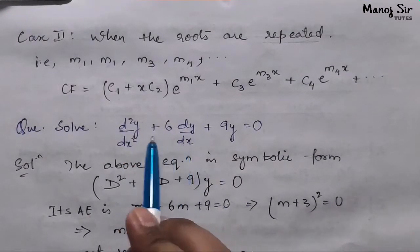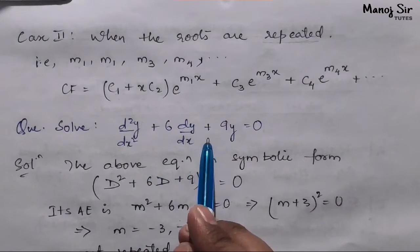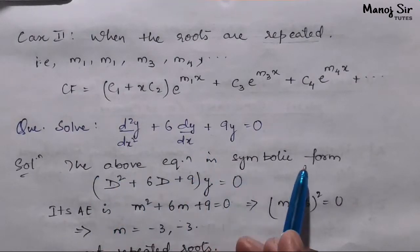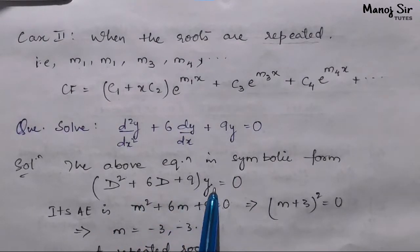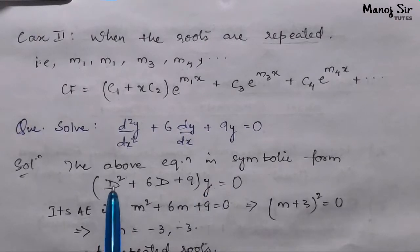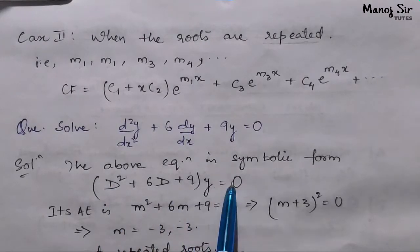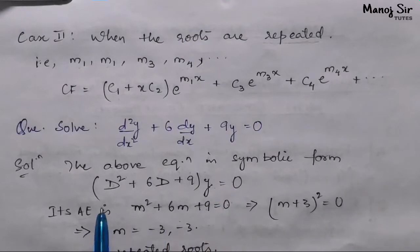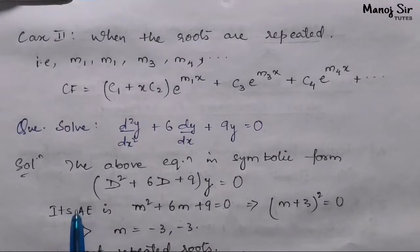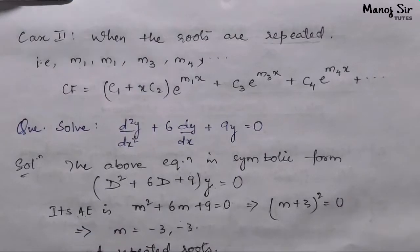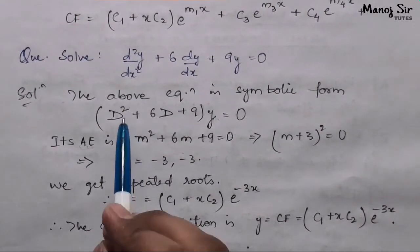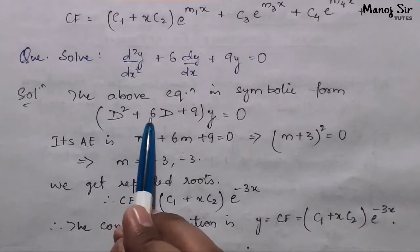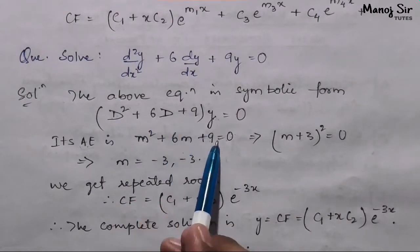First of all we need to write this equation in symbolic form. The above equation in symbolic form is given as D²y + 6Dy + 9y. Taking y common we will get (D² + 6D + 9)y = 0. Now we are interested in finding the auxiliary equation. For the auxiliary equation I am replacing D with m. So the auxiliary equation is m² + 6m + 9 = 0.